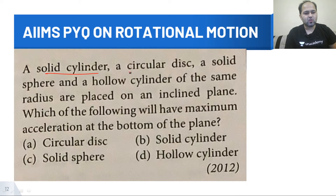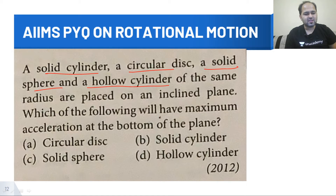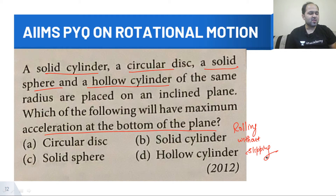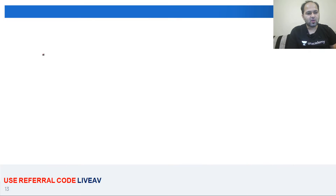A solid cylinder, a circular disc, a solid sphere, and a hollow cylinder of same radius are placed on an inclined plane. Which of the following will have maximum acceleration at the bottom of the plane, assuming all of them are rolling without slipping? आपको बताना है कि किसका acceleration bottom पे सबसे ज़्यादा होगा.